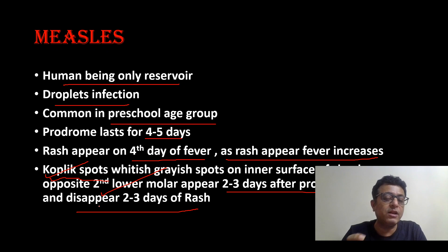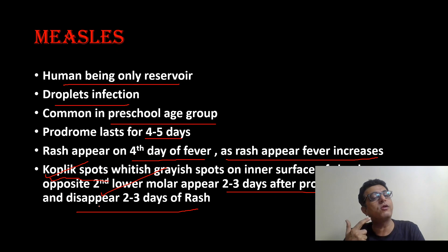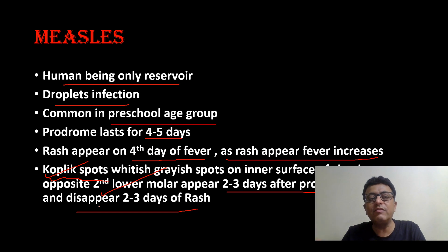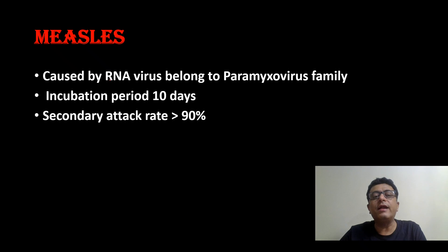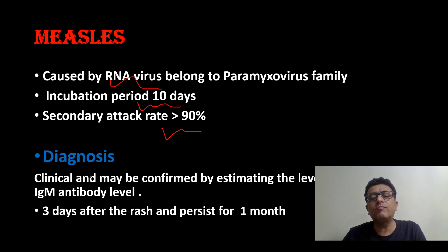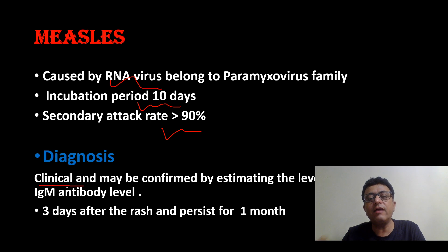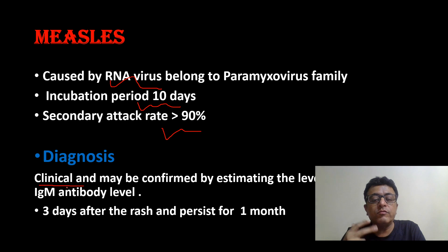When a child presents with conjunctivitis, running nose, and mild fever on the third day, look for Koplik spots. When a child comes with fourth-day rash and fever, look for Koplik spots — it's measles. Incubation period is 10 days. Secondary attack rate is more than 90%. Clinically diagnosed by the fourth-day rash, fever shoot, and Koplik spots opposite the second molar. Confirmed by circulating level of IgM antibody when the picture is atypical.